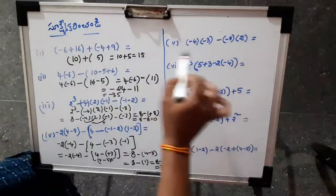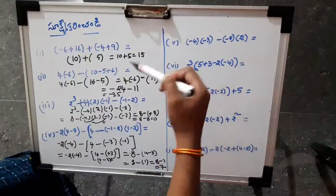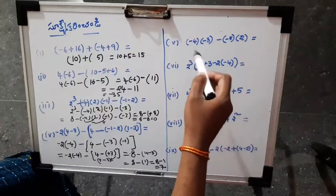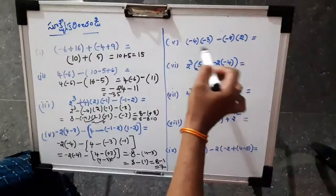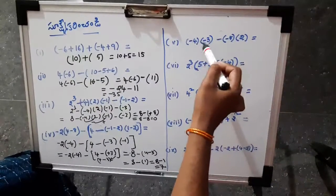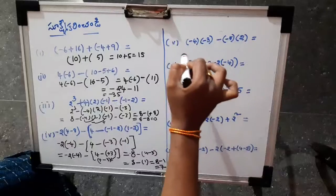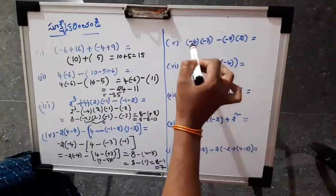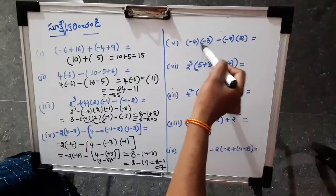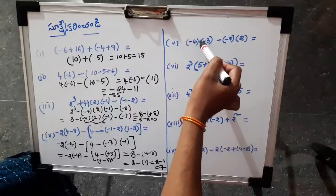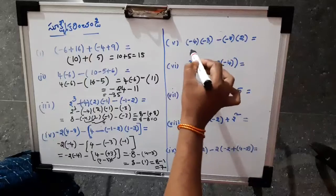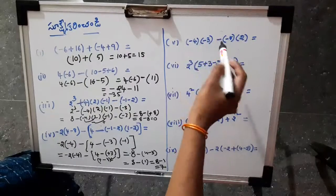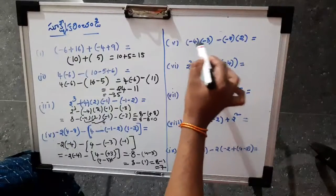You can see the first one: if you get a negative number, we will start from the start. There are two brackets. You cannot apply in the one. First, it will be: minus × minus = plus. The same rule: minus × minus = plus. So, the four is 18.